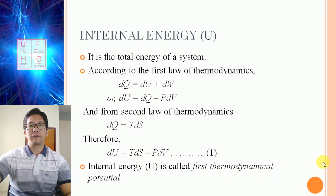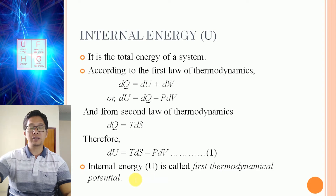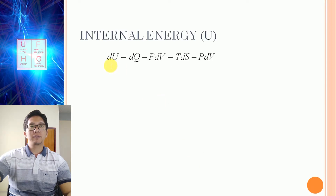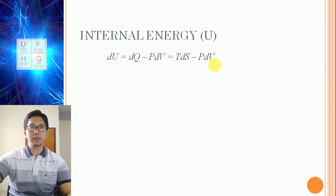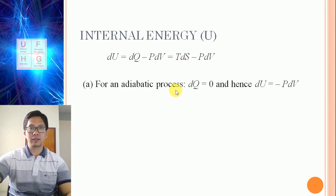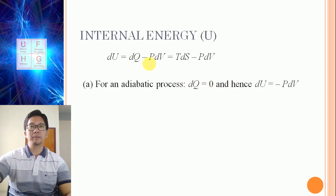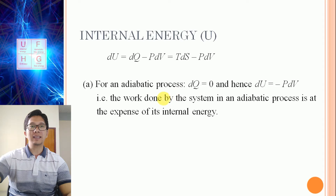Equation 1 gives the change in internal energy: DU equal to TDS minus PDV. For an adiabatic process, there is no transfer of heat, so DQ equals zero. Hence DU equals minus PDV. This means that in an adiabatic process, work done by the system is at the expense of its internal energy.